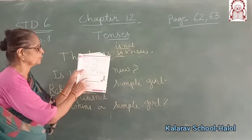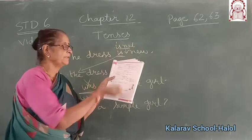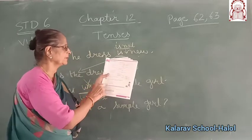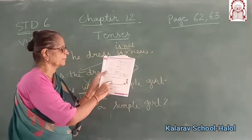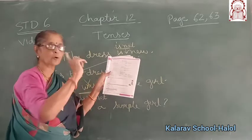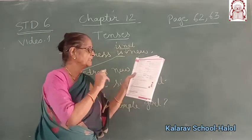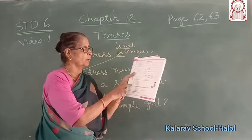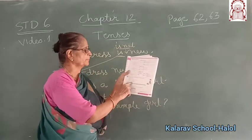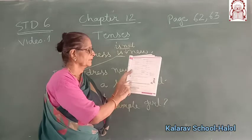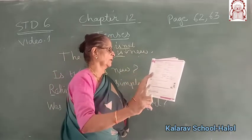'The magic show will be over in an hour.' Negative: 'The magic show will not be over in an hour.' Interrogative: 'Will the magic show be over in an hour?' Next, 'The sun is shining brightly.' Negative: 'The sun is not shining brightly.' Interrogative: 'Is the sun shining brightly?' And 'The girl is playing with a ball.' Negative: 'The girl is not playing with a ball.' Interrogative: 'Is the girl playing with a ball?'